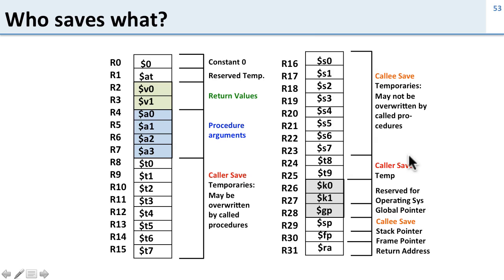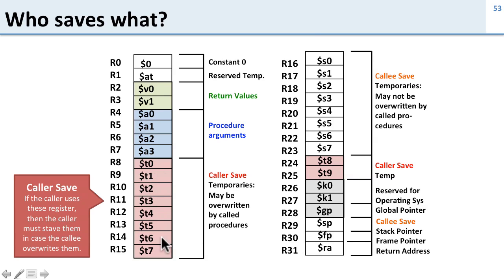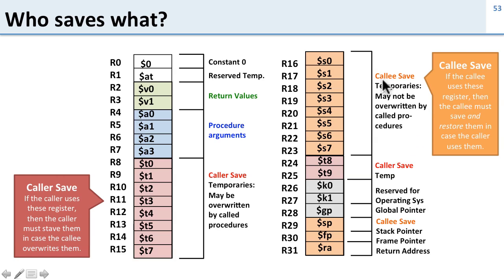Here's our picture of the register file. The red registers — the temporary or T registers — are caller-saved. This means if the caller uses any of these registers, the caller has to save them on the stack before calling. The orange ones are callee-saved: if the callee uses any of these registers, the callee has to save them on the stack before writing over them and restore them before returning. So we have callee-saved S registers and caller-saved T registers for temporary registers.